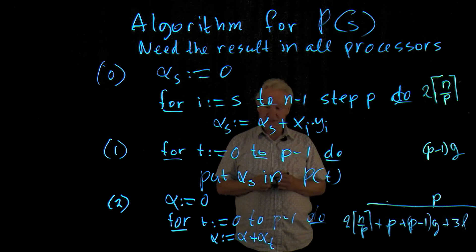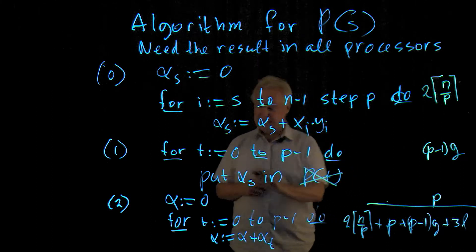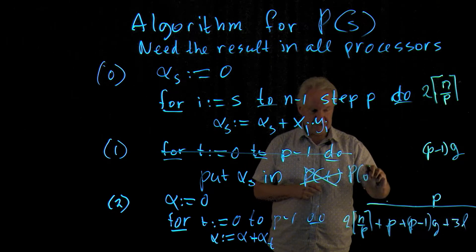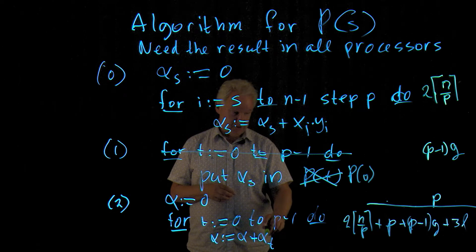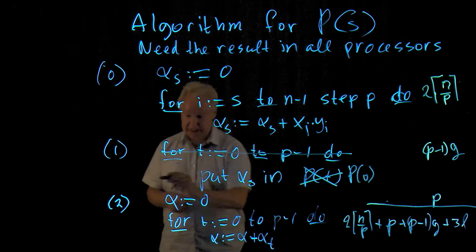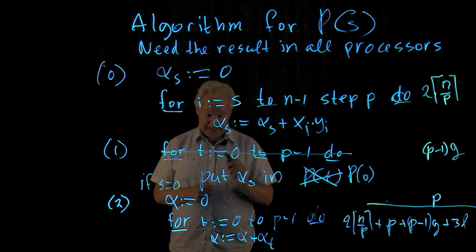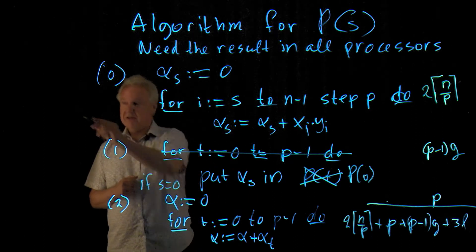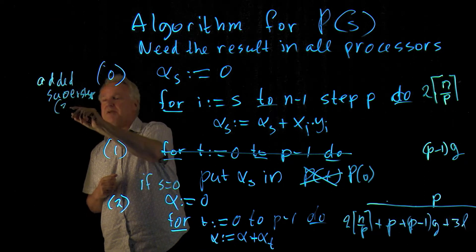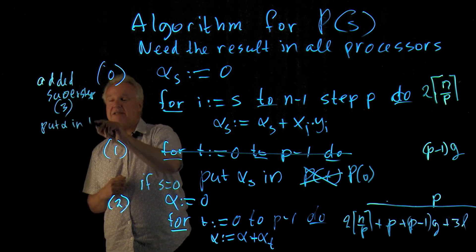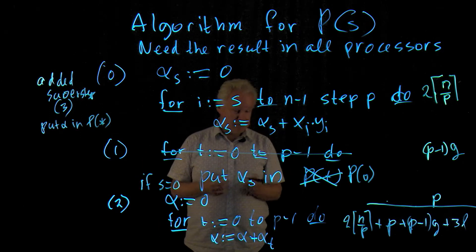Okay, so I hope you thought about this. The answer is, well let's see what we have to adjust. So instead of sending it to all of this, I just send it to p zero, but then only p zero has the knowledge of the partial results, so we need to write if s equals zero, only then we perform this. And then at the end, we need another super step, an added super step. And this will be three, where we put alpha in p star. This is my shorthand for send it to everybody. So, you see, we need an extra super step if we do it this way.